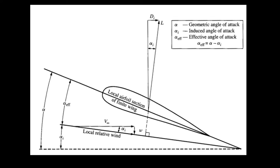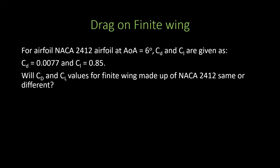To summarize: in finite wings, wing tip vortices change the local flow, reducing the effective angle of attack. Due to this reduction, the lift vector gets tilted, producing a horizontal component equivalent to an additional drag — known as induced drag. So for a finite wing, in addition to form drag and skin friction drag, we also have induced drag.